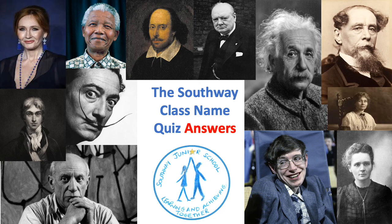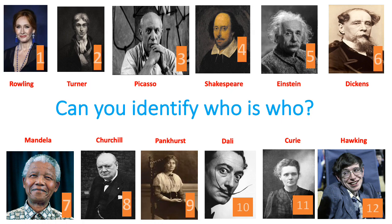And on to the answers to the Southway class name quiz. You could have got 12 points in this bonus round. Number one was Rowling, two was Turner, three was Picasso, four was Shakespeare, five was Einstein, six was Dickens, seven was Mandela, eight was Churchill, nine was Pankhurst, ten was Dali, eleven was Curie, and twelve was Hawking.